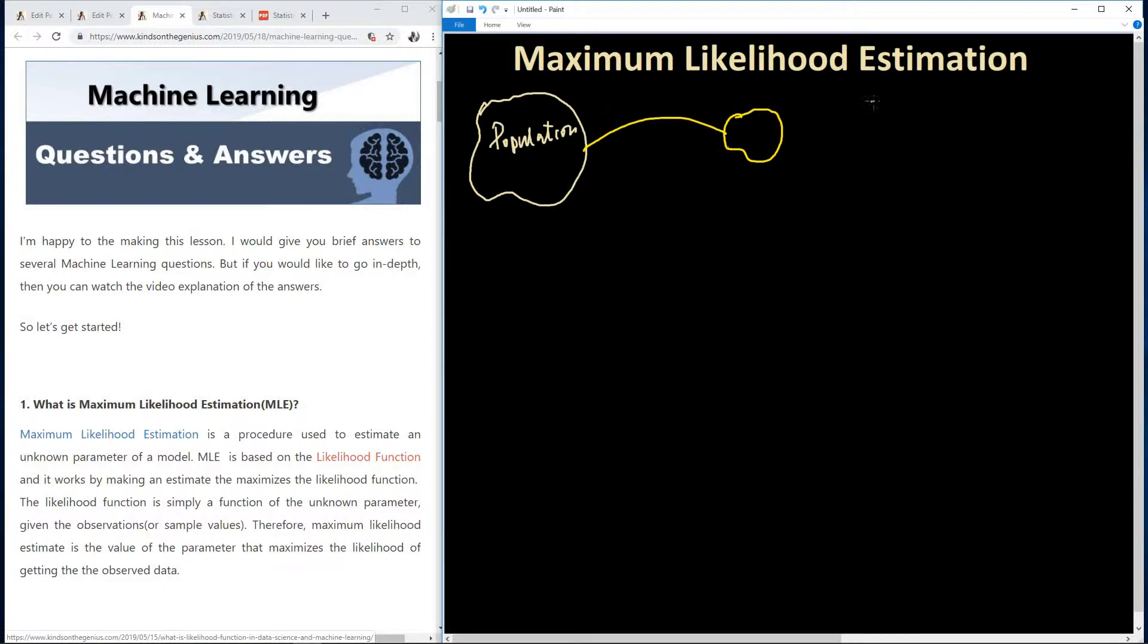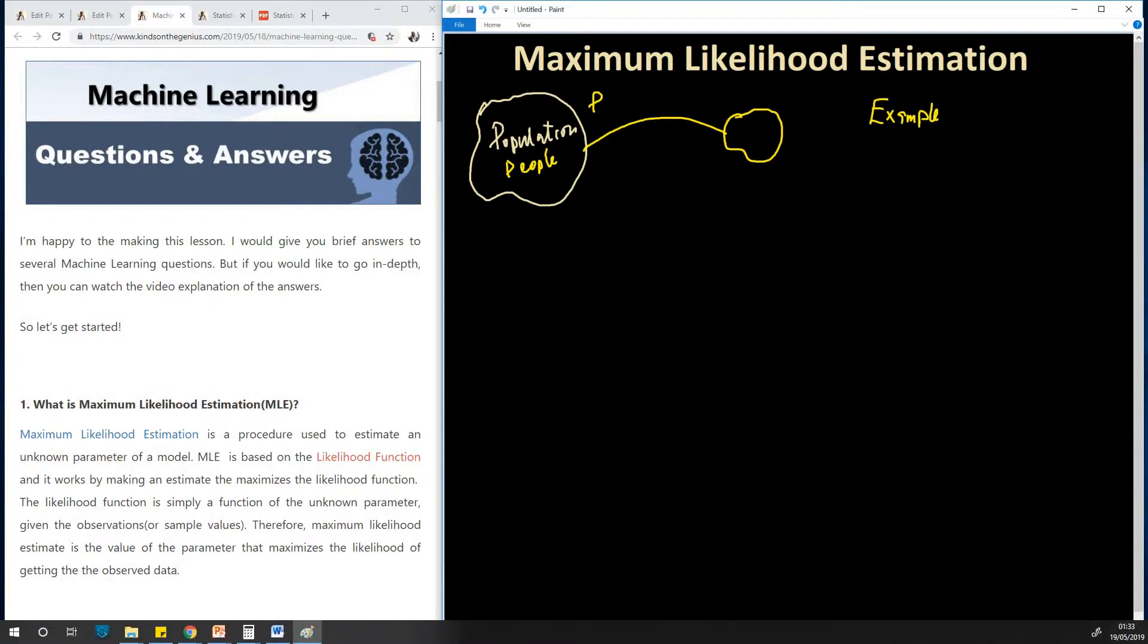So let's take a typical example. We want to estimate the probability of selecting a male from this population. So we have a population of people, both male and female. So we want to estimate the probability of selecting an item from this population. So this probability will be 1 if it's a male and 0 if it's a female. So what we are trying to estimate now is p. We are trying to estimate the parameter p.